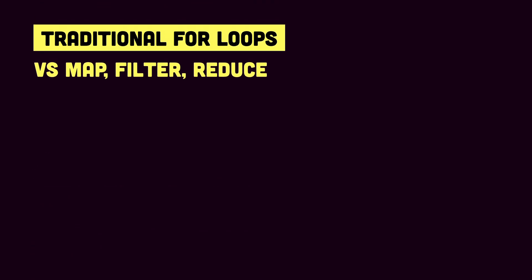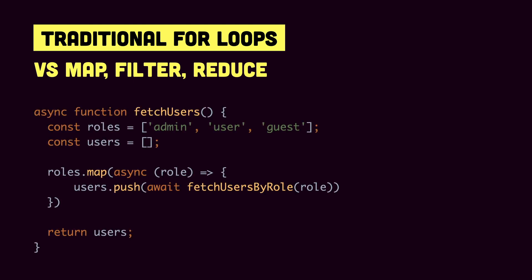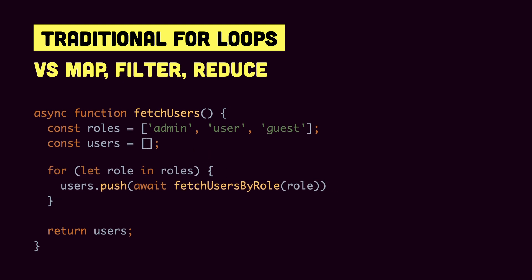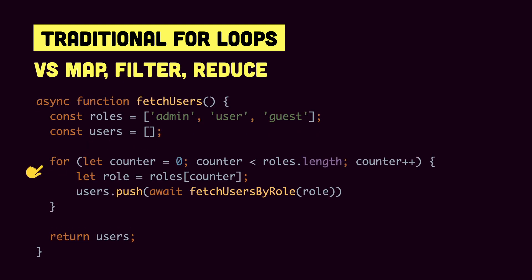Another common mistake when using async/await is with map, reduce, forEach, and filter functions. Say we have a fetchUsers function with a roles array, and we iterate using map — inside each iteration we push to the users array by awaiting fetchUsersByRole. When you run this, you might expect a list of users, but you get an empty array. The reason is that the await inside map is tied to the anonymous async function passed to map, not to the parent fetchUsers function. To get the expected result, use a for loop — either for...of or a traditional for loop with a counter — so the await is tied to fetchUsers directly.